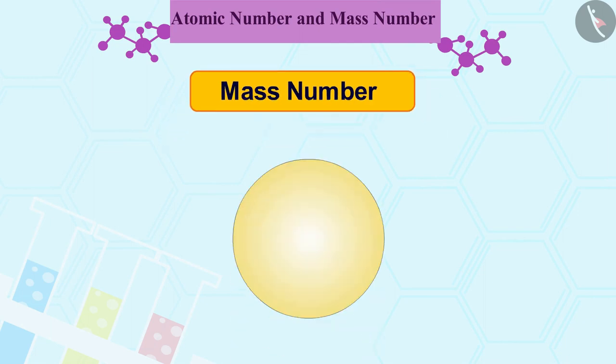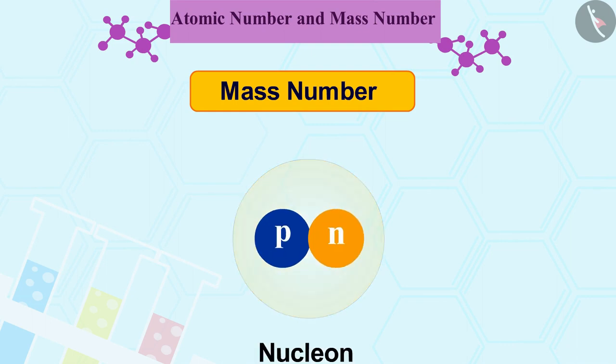Mass of an atom is practically due to the protons and neutrons which exist in the nucleus. These are present in the nucleus of an atom. Hence, protons and neutrons are also called Nucleons.